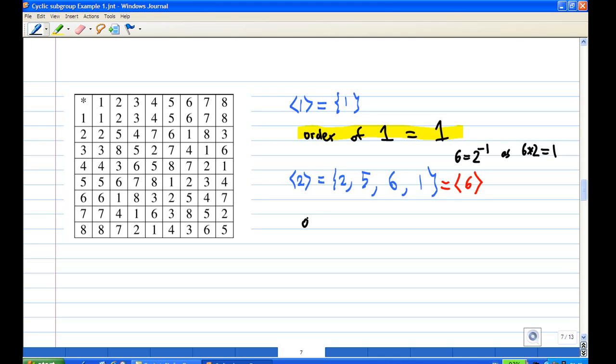The size of the cyclic subgroup generated by 2 is 4. So the order of 2 is equal to 4, since there are 4 elements there. This is the same as the order of 6. The cyclic subgroup generated by 6 is the same as the cyclic subgroup generated by 2, so both of them have order 4.